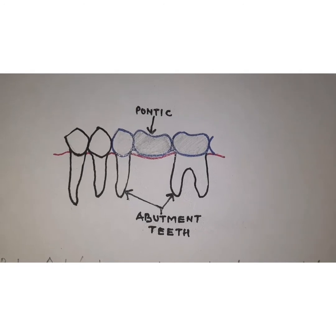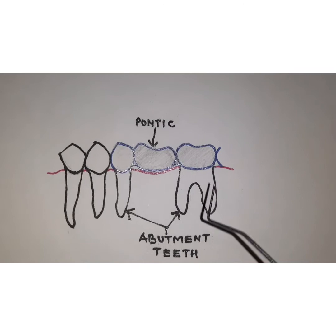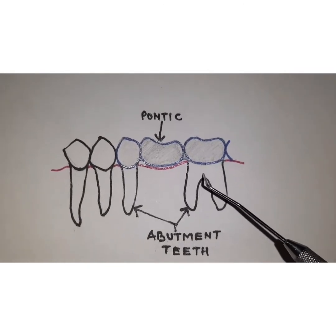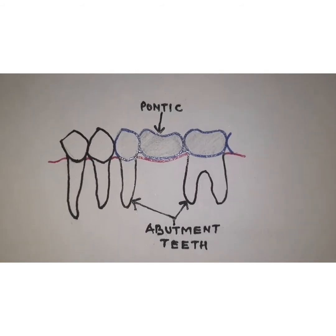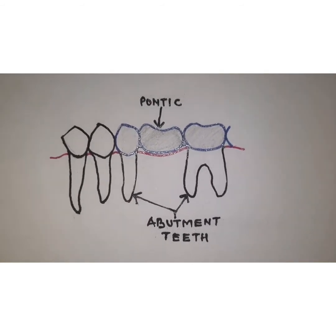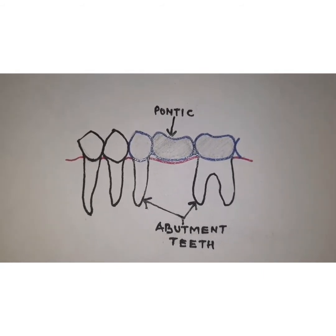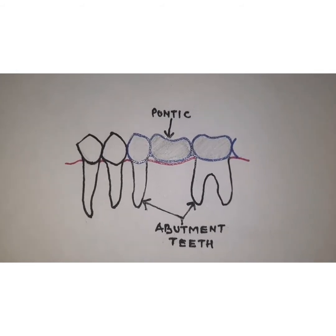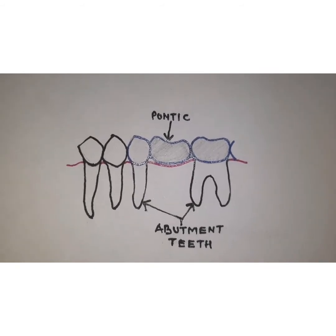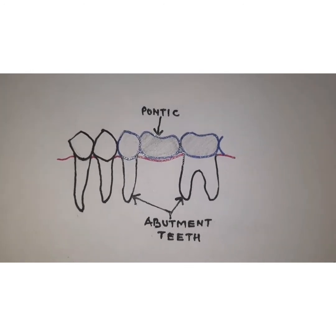The abutment teeth should have an adequate amount of coronal tooth structure, because without enough coronal structure you will not have a good crown-to-root ratio, which is very vital for success of the fixed prosthesis. Another criterion is that the abutment teeth should be vital. If they are not vital, then even a restored or endodontically treated tooth can also be selected.